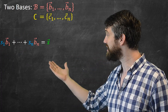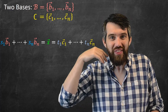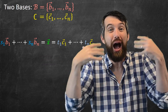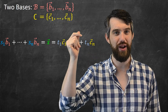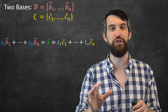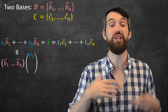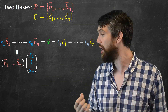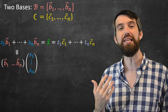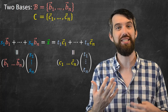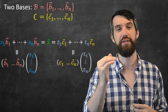I can take the same x and write it in terms of the c basis as well — there are two different possible choices for how to write it. Any time you have a linear combination, that's just multiplication by a matrix. So the linear combination of the b vectors is the matrix whose columns are the b vectors, multiplied by the coefficients s1 through sn. Likewise for c: a matrix whose columns are c1 through cn, multiplied by coefficients t1 through tn.